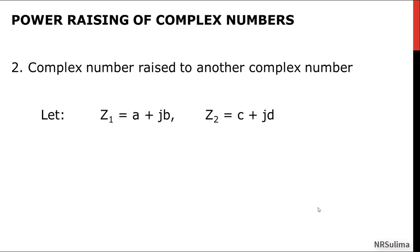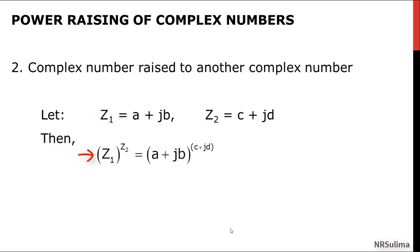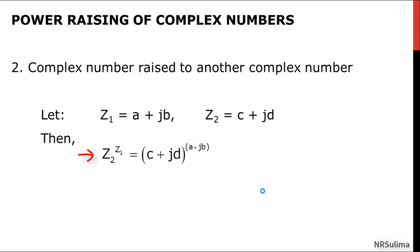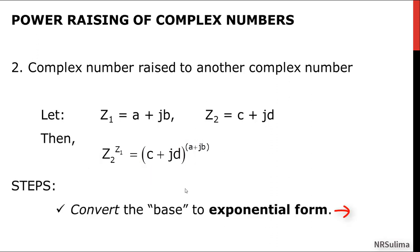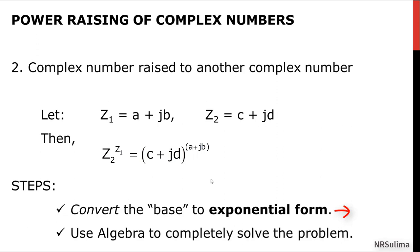Next, if we have a complex number raised to another complex number, suppose we have z1 and z2 with values a plus jb and c plus jd. If you raise z1 to the power of z2, you get a plus jb raised to the power of c plus jd, where z1 is the base and z2 is the exponent. However, if z2 is raised to z1, then the base is c plus jd and the exponent is a plus jb. To solve this type of problem, we follow two steps: first, convert the base to exponential form; second, use algebra to completely solve the problem.